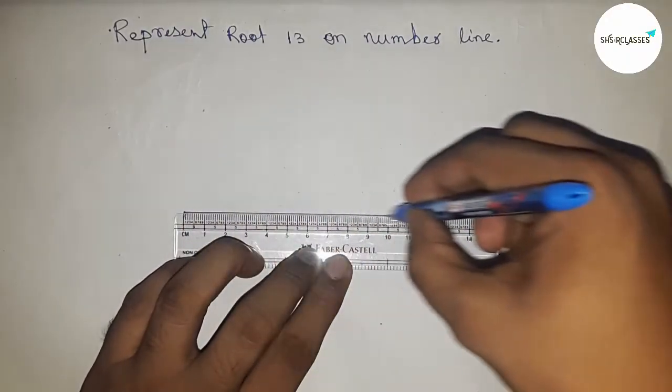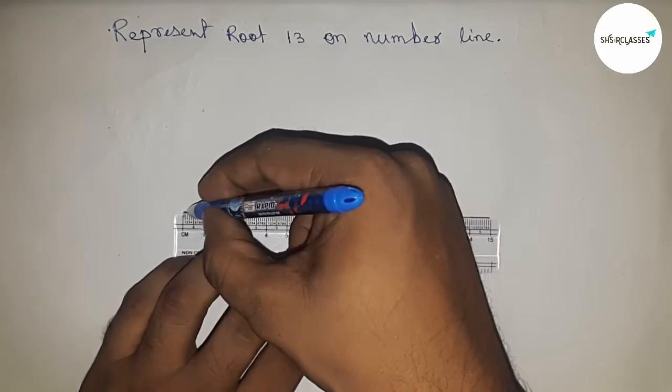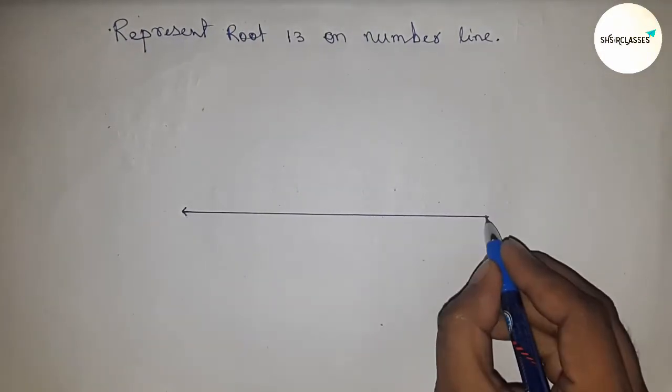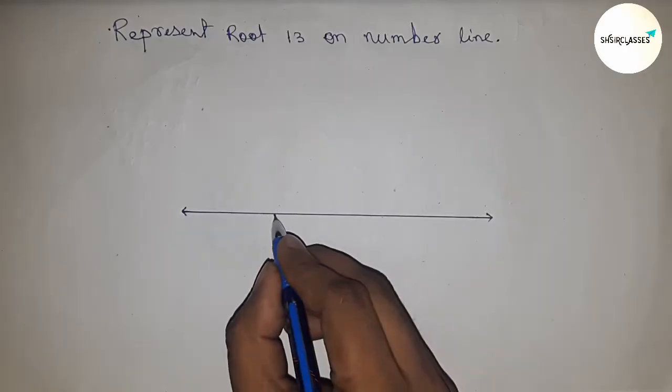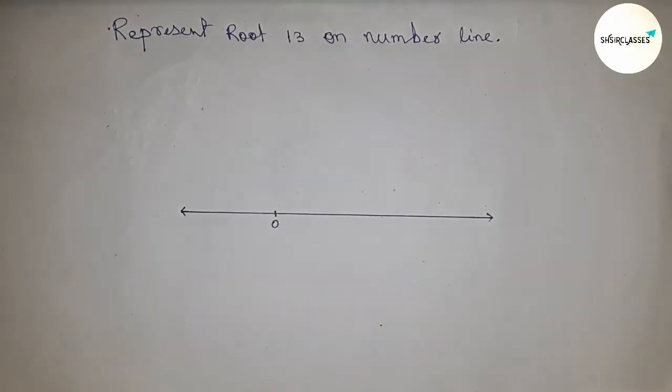First of all, draw a line of any length here and mark the ends with arrows. This represents a number line perfectly. Mark zero here.